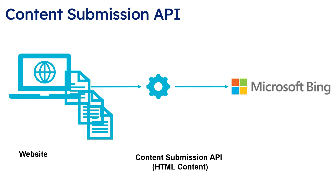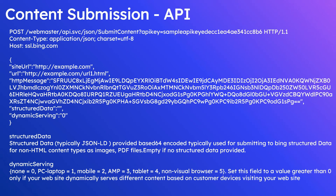This technically bypasses the crawling process completely. In summary, the URL Submission API allows you to only submit URLs for crawling or recrawling. The Content Submission API lets you submit URLs along with the HTML content. Similarly, the IndexNow API also allows you to only submit URLs for crawling or recrawling.